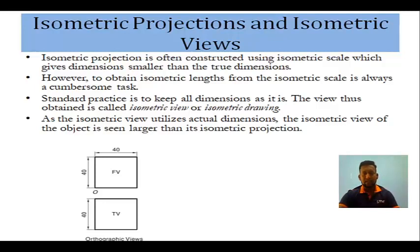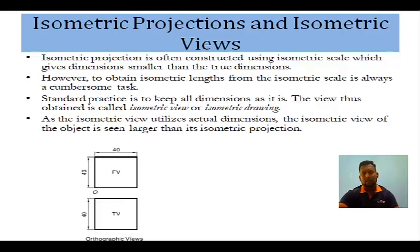The two basic rules to remember when converting a two-dimensional figure into a three-dimensional figure are: a vertical line in the orthographic view will remain vertical in the isometric view as well, and a horizontal line in the orthographic view will become 30 degrees in the isometric view.